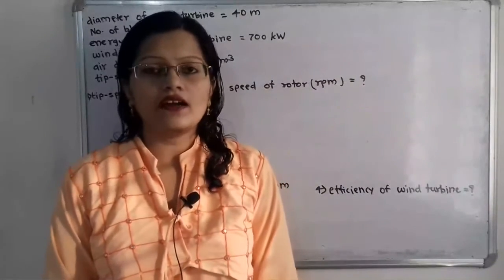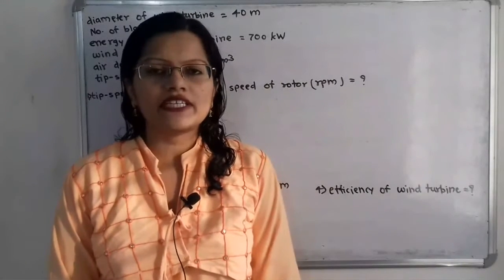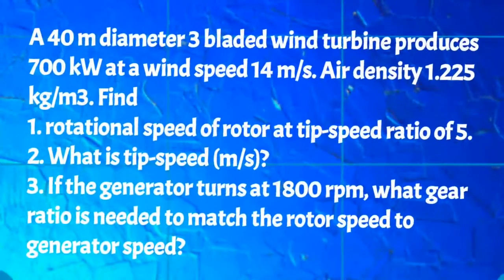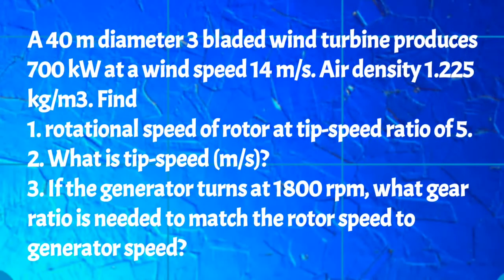Hello friends, this is Priyanka. Today we are going to solve a problem on wind turbine. A 40 meter diameter three-bladed wind turbine produces 700 kilowatt at a wind speed of 14 meter per second, air density 1.225 kilogram per meter cube. Find: first, the rotational speed of rotor at tip speed ratio 5; second, the tip speed in meter per second; third, if the generator turns at 1800 rpm, what gear ratio is needed to match the rotor speed to the generator speed.